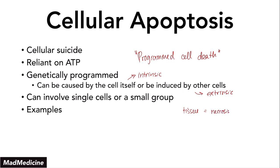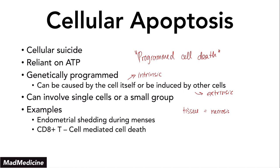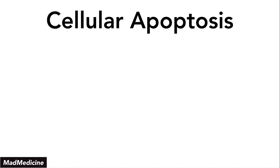The main examples you need to remember are: the endometrial lining that sheds during menses — that is a form of intrinsic apoptosis; the CD8-positive killer T cells, which can kill off cells through extrinsic apoptosis; and also embryogenesis. A lot of people forget that embryogenesis involves apoptosis, especially intrinsic apoptosis.